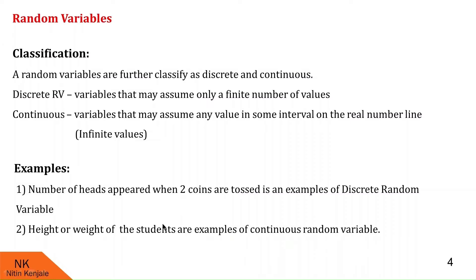Similarly, the height or weight of students are examples of continuous random variables, because the height of an average student may vary from 4 feet to 6 feet, and the weight of average students may vary from 60 to 80 kg. These variables — height and weight — may take any value in that range, so they are continuous random variables.